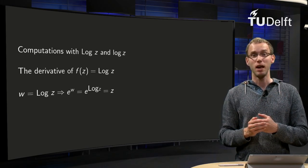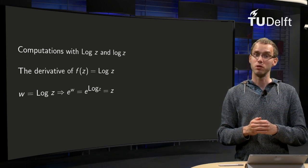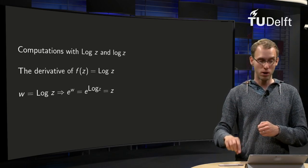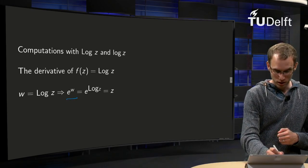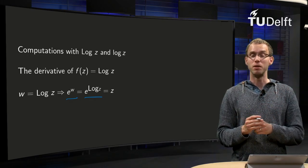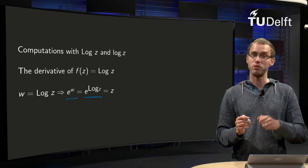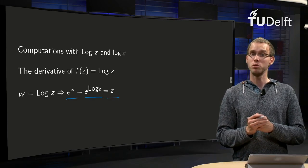We can find that using implicit differentiation, because if w equals log of z, then we know that e to the power w equals e to the power log of z, and we have seen in the previous example that e to the power log of z is always equal to z if z is not equal to zero.